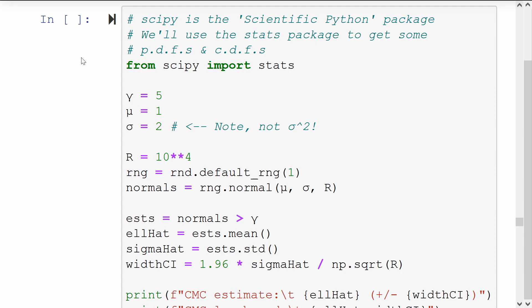We then simulate 10,000 of these normal random variables. And for each one, we calculate whether or not it exceeded our threshold gamma. The Boolean responses are stored in the vector S. And to get an estimate of the exceedance of the tail probability, we just take the mean of this vector, store that in L hat. The next two lines are simply to calculate the confidence interval width.